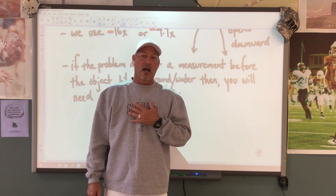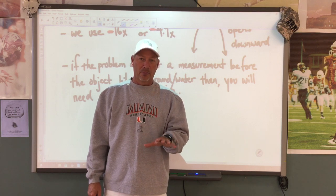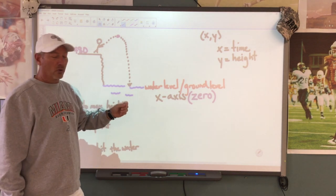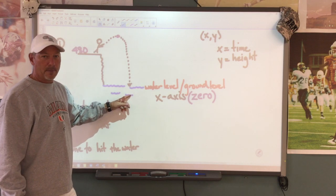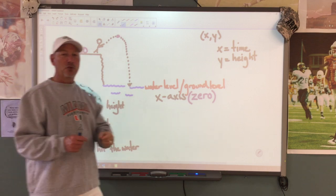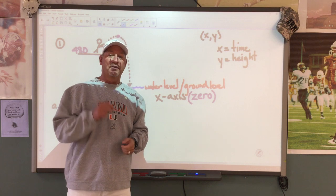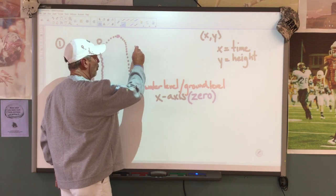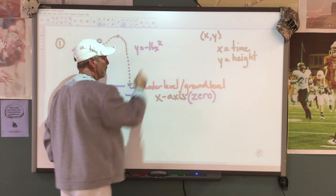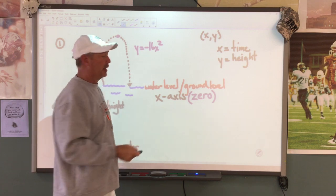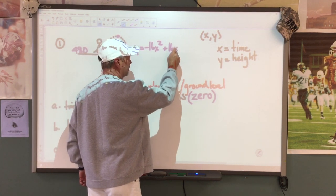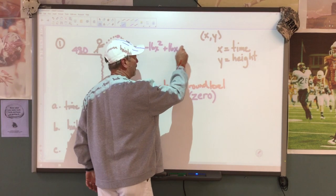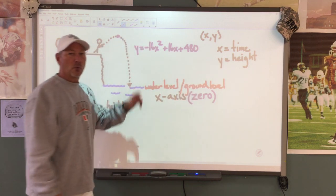Before we get into the problems, I'm a math teacher, not an art teacher, so please don't make fun of my pictures. Question number one: this is Jason. Jason's in Acapulco and he's going to jump off a cliff into the water. The cliff is 480 feet high. He has an initial velocity of 16 feet per second. All these feet measurements mean we're going to use negative 16. So my equation is going to be y equals negative 16x squared plus 16x plus 480. We're going to graph that equation.